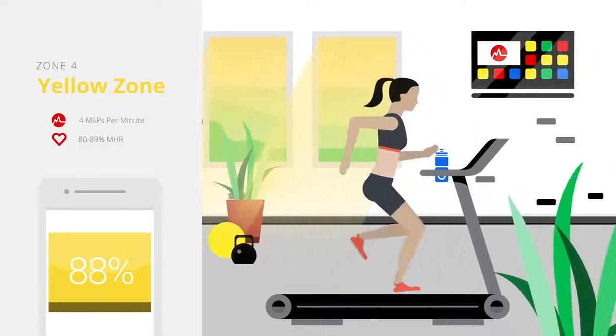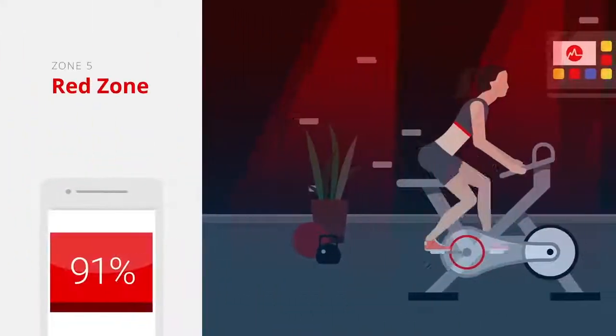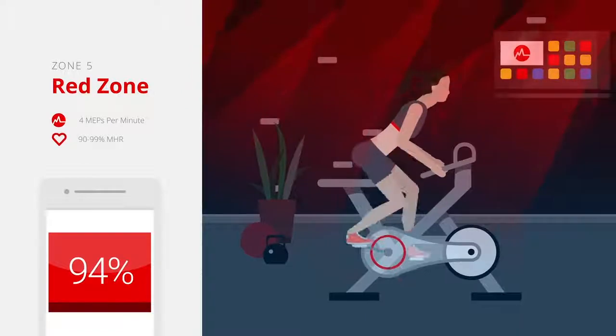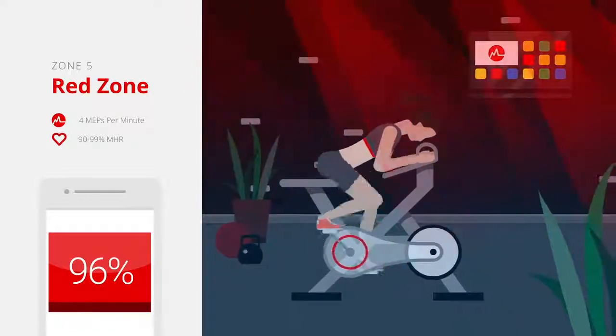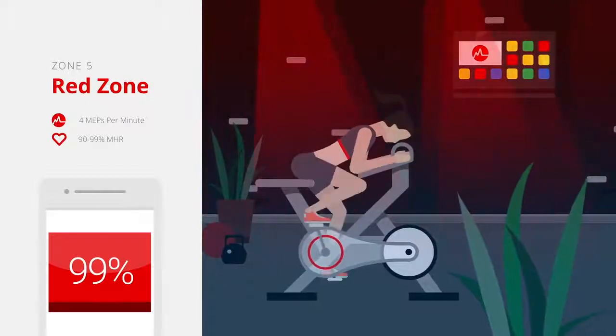90 to 99 percent, used for threshold training and HIIT workouts. Red is the highest intensity zone. You may find you can stay in the first half of the zone easier than when you hit 95 percent and above.